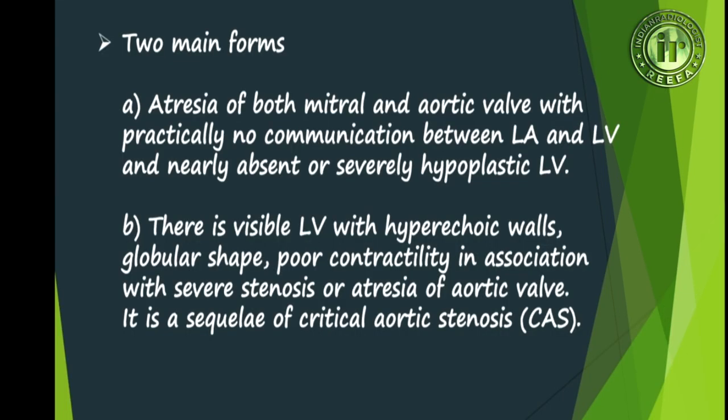HLHS is present in two main forms. In the first form there is atresia of both the mitral and aortic valve with practically no communication between the left atrium and left ventricle, and a nearly absent or severely hypoplastic left ventricle. In the second form there is a visible left ventricle with hyperechoic walls, globular in shape, with poor contractility in association with severe stenosis or atresia of the aortic valve. This is a sequelae of critical aortic stenosis.